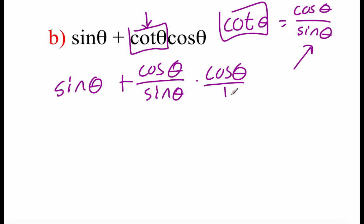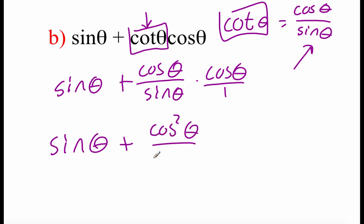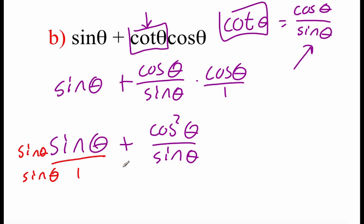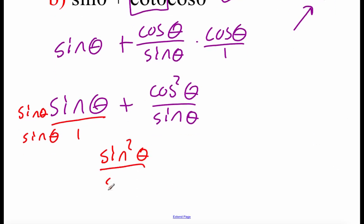So we get sine of theta plus cosine of theta over sine of theta times another cosine of theta. Multiplying those fractions together on the right-hand side: cosine times cosine is cosine squared of theta on top, and sine of theta on the bottom. Now we've got sine of theta plus cosine squared of theta over sine of theta.